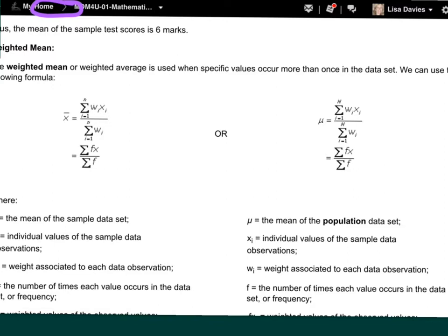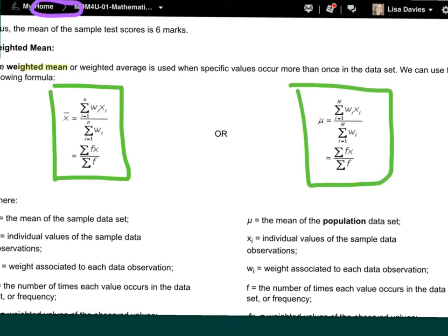Now the weighted mean is a little bit different. What the weighted mean really is is a shortcut to finding the mean when you have multiple values that are equal, like values that are the same. So in the formula that we're looking at, it looks a little bit more complicated than it needs to be. But you notice the similarities between the mean formula. Again, we have x bar and we have mu depending on whether we have sample data or population data. And we've got w times x and w times x in our formula.